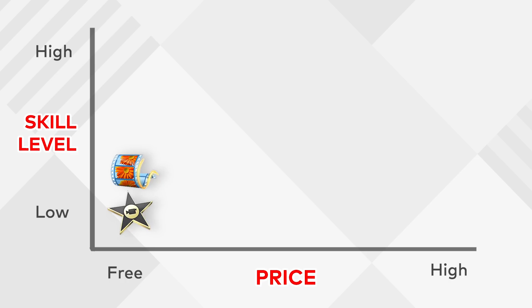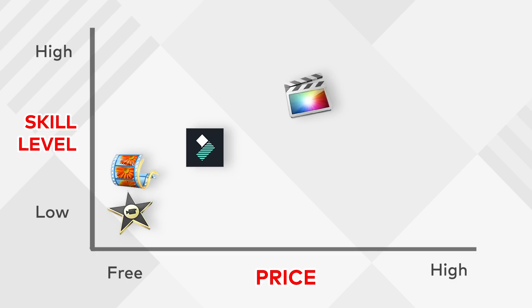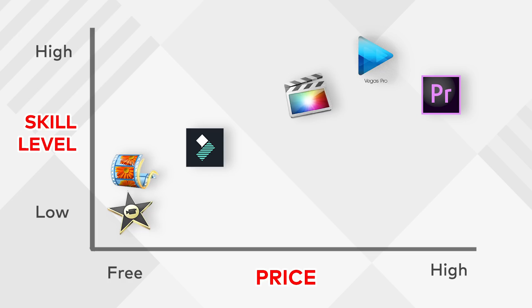So how do these software stack up against each other? iMovie and Movie Maker are for complete beginners and are a hundred percent free — great to get started, but you may soon realize you need a more advanced product. That's where Filmora comes in: it's powerful and feature-rich but won't burn a hole in your pocket at $50. Once you become an even more advanced editor, you may want features like motion tracking or compositing, at which point you may want to upgrade to Final Cut, Vegas Pro, or Premiere, depending on your operating system and needs. Keep in mind Final Cut and Vegas are one-time payments, while Premiere Pro requires a monthly subscription, making it the most expensive software on our list.